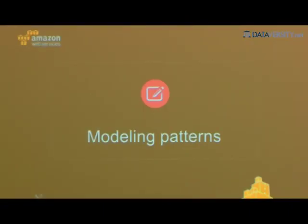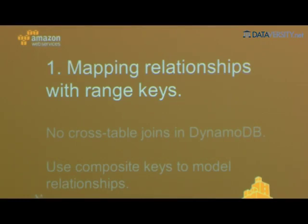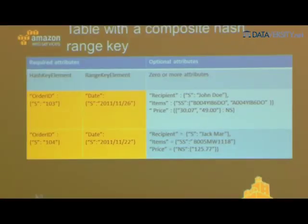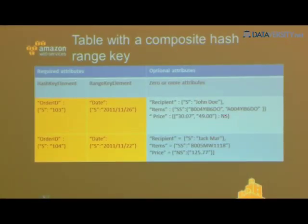There are some data modeling patterns when using DynamoDB. You can map relationships with range keys — there are no cross-table joins, as you're not doing complex SQL transactions. But you can create as many tables with as many keys as you need. For example, if you have an order ID as the hash key and date as the range key as your primary key, you can have zero or more additional attributes. A particular set of items in an order might have two items, while another has only one.